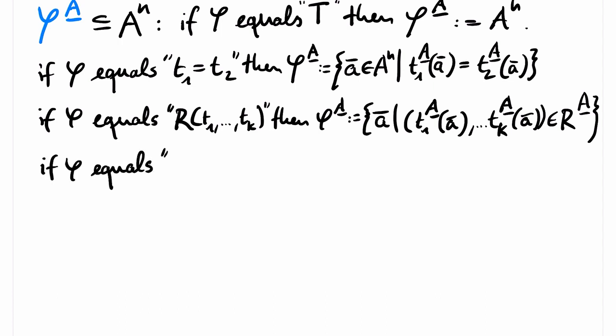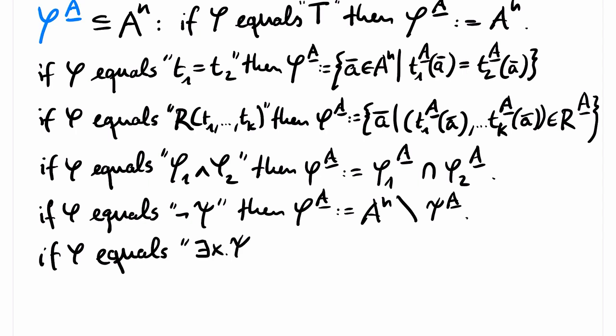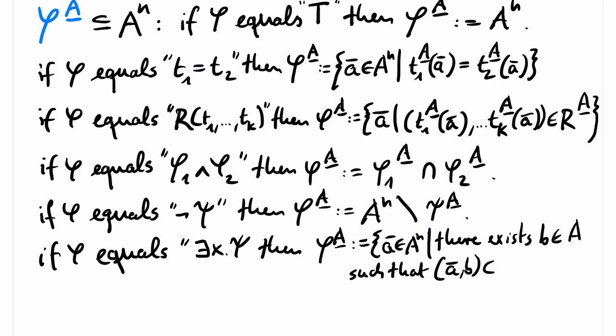If phi equals phi1 and phi2, then the relation for phi is the intersection of the relations for phi1 and phi2. If phi equals not psi, then the relation for phi is the complement of the relation for psi. Finally, if phi equals exists x psi, then the relation for phi can be obtained from the relation for psi by projecting to the first n arguments. In other words, we take the set of all n-tuples of elements of A that can be extended to a tuple of length n plus 1 that lies in the relation for psi.